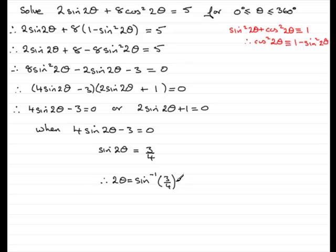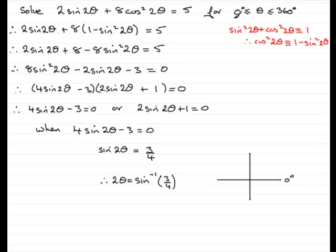I'm going to draw a quadrant diagram to look at all the possible solutions. Starting at 0°, we have a range for θ from 0 to 360°, but we're dealing with 2θ, so we need a new range for 2θ. Doubling each endpoint: 0° ≤ 2θ ≤ 720°. We need all angles for 2θ in this range.